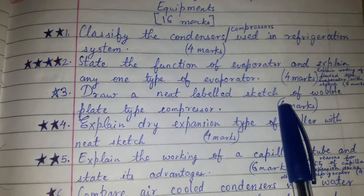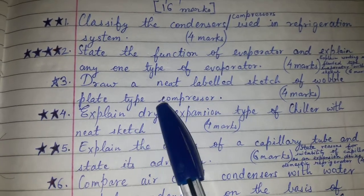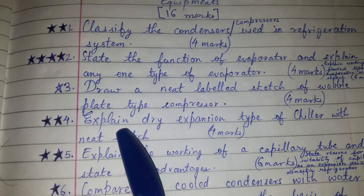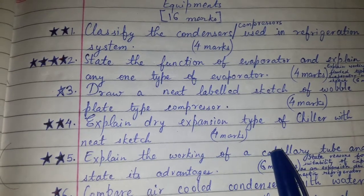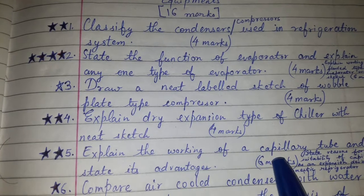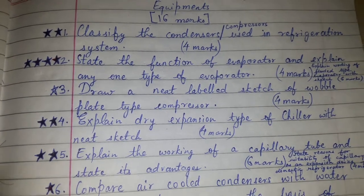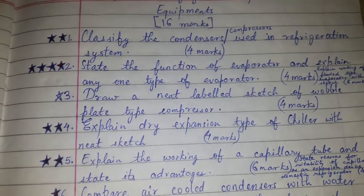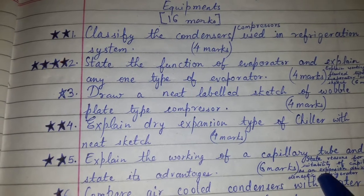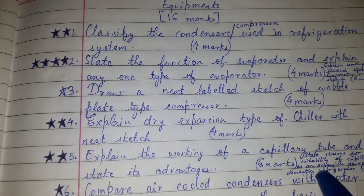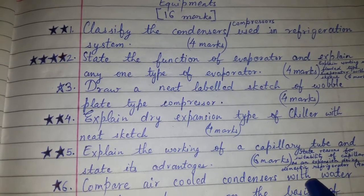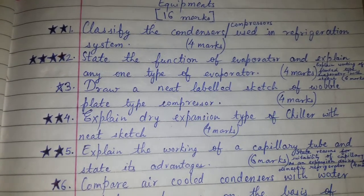Draw a neat labelled sketch of mobile plate type compressor. Explain dry expansion type chiller with neat sketch for four marks. Explain the working of a capillary tube and state its advantages — this was asked for six marks.